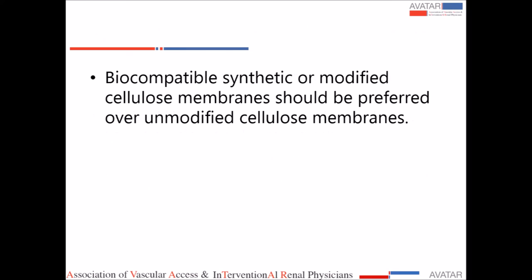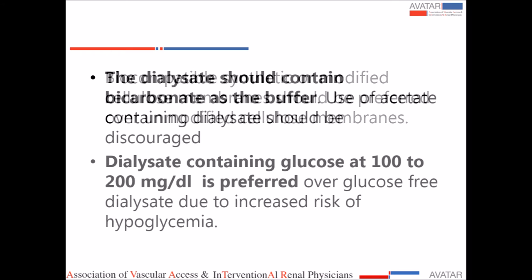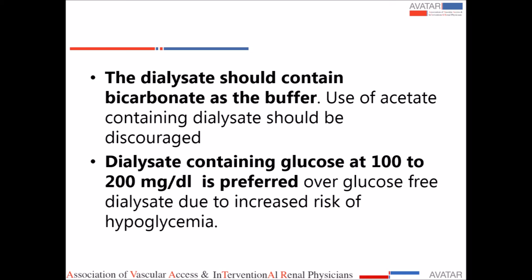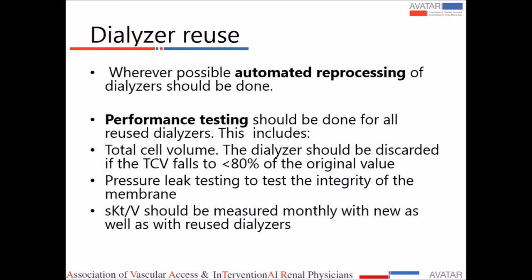Coming to dialysis membranes — biocompatible synthetic or modified cellulose membranes should be preferred over unmodified cellulose membranes. Bicarbonate should always be used as the buffer; use of acetate-containing solutions is to be discouraged. Dialysate containing glucose is preferred over glucose-free dialysate, as the latter increases the risk of hypoglycemia. If reusing the dialyzer, automatic reprocessing should be done followed by performance testing for all reused dialyzers. The total cell volume should be more than 80%; if it falls below 80%, the dialyzer should be discarded. Pressure testing should be done to test the integrity of the membrane, and KT/V should be calculated monthly for new as well as reused dialyzers.